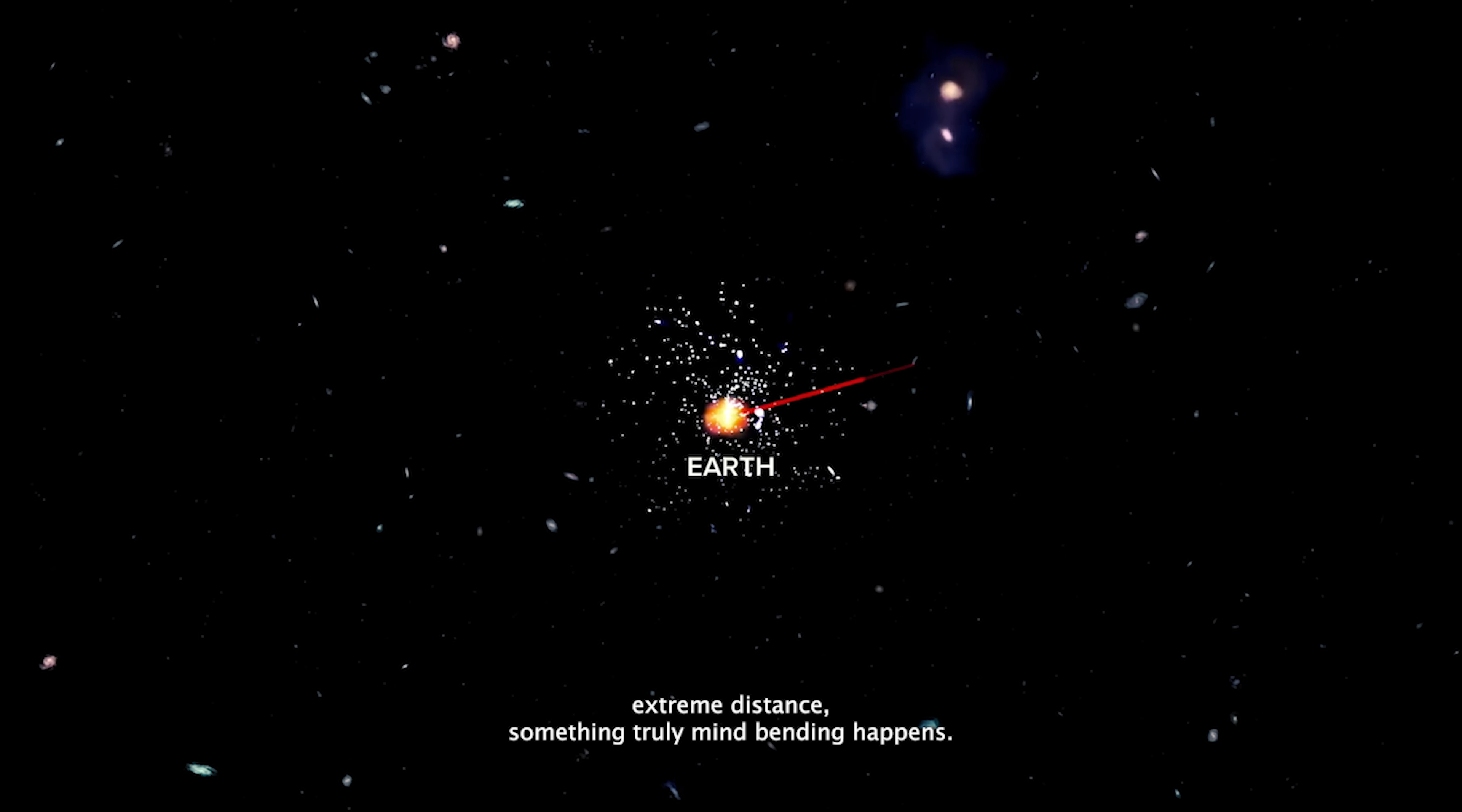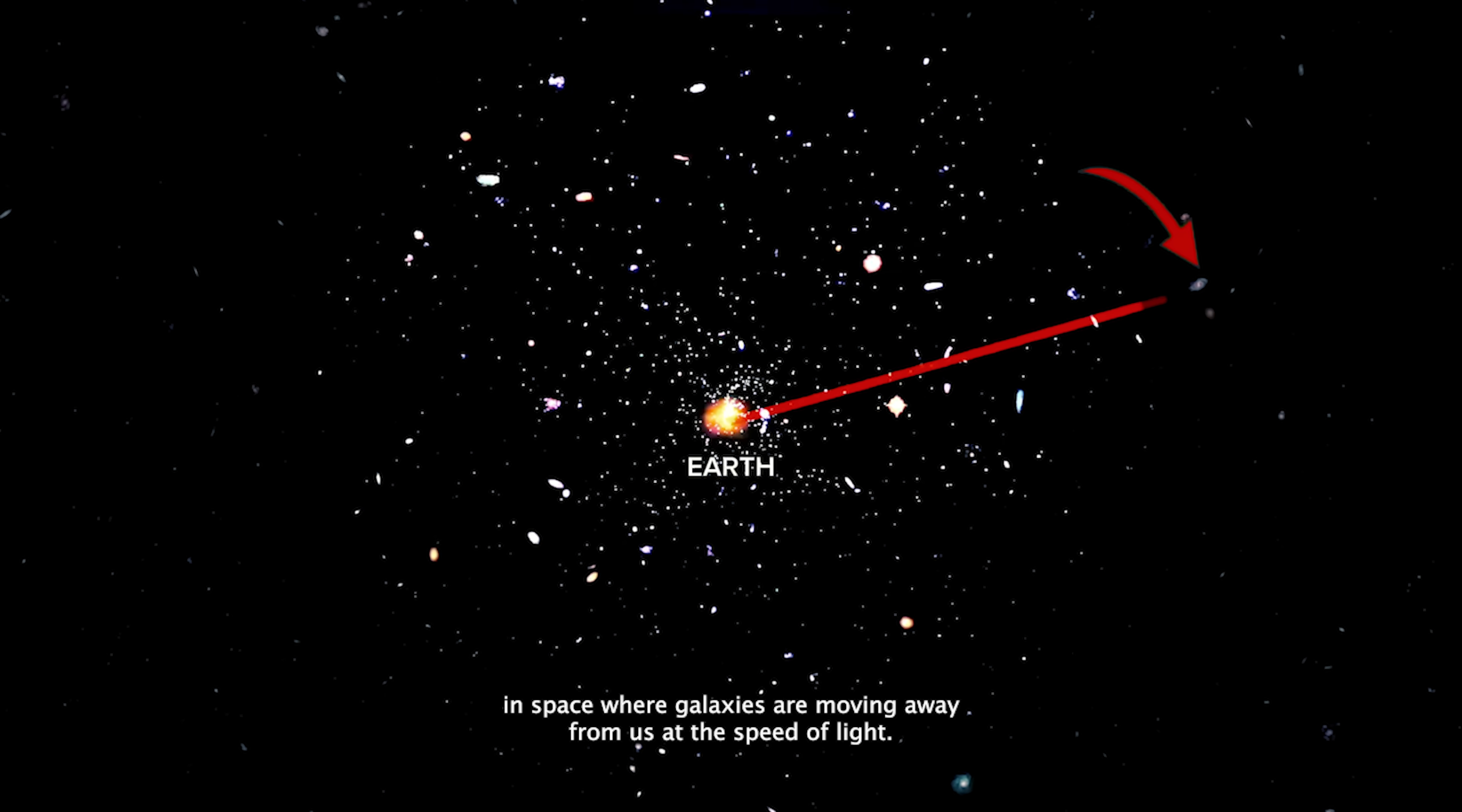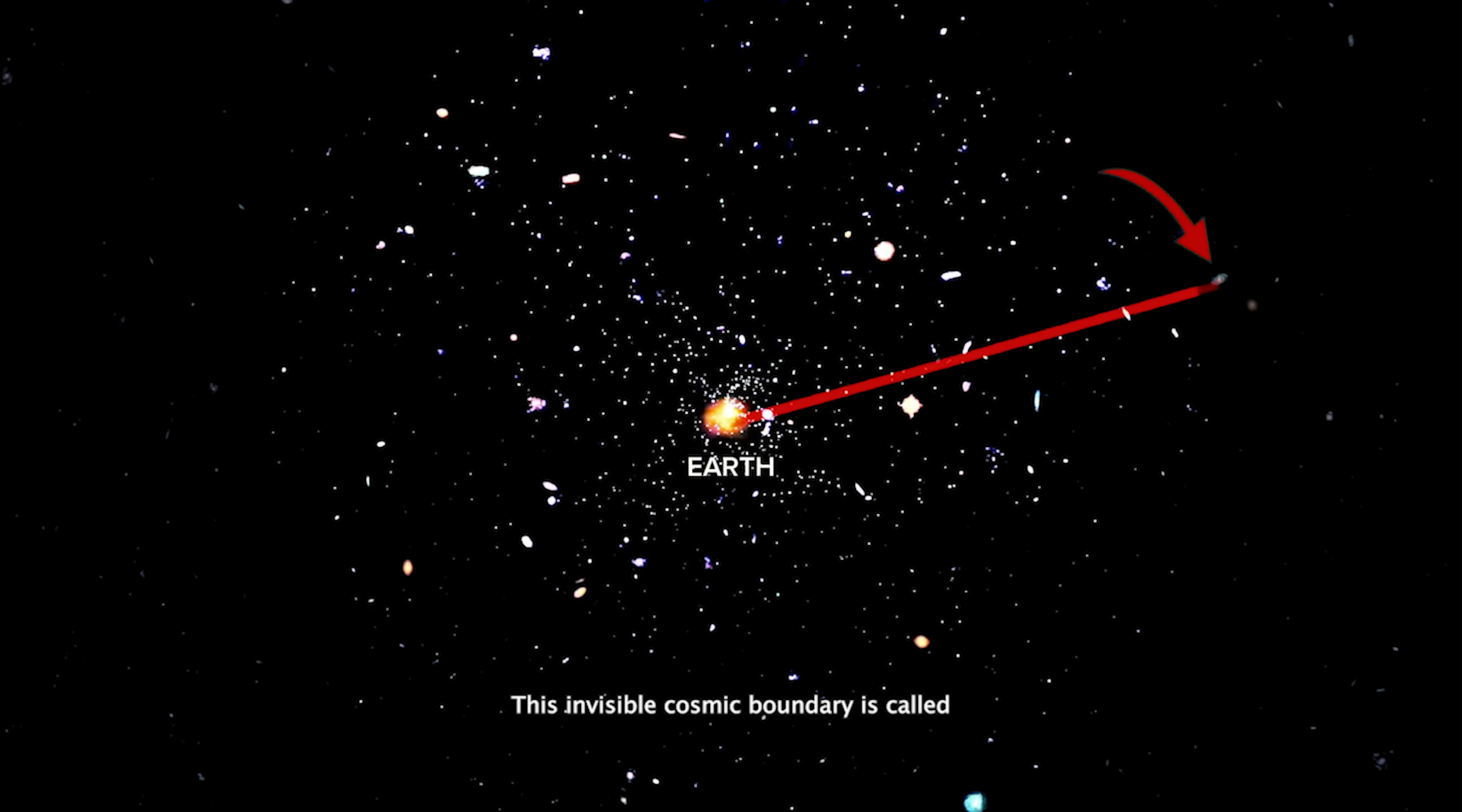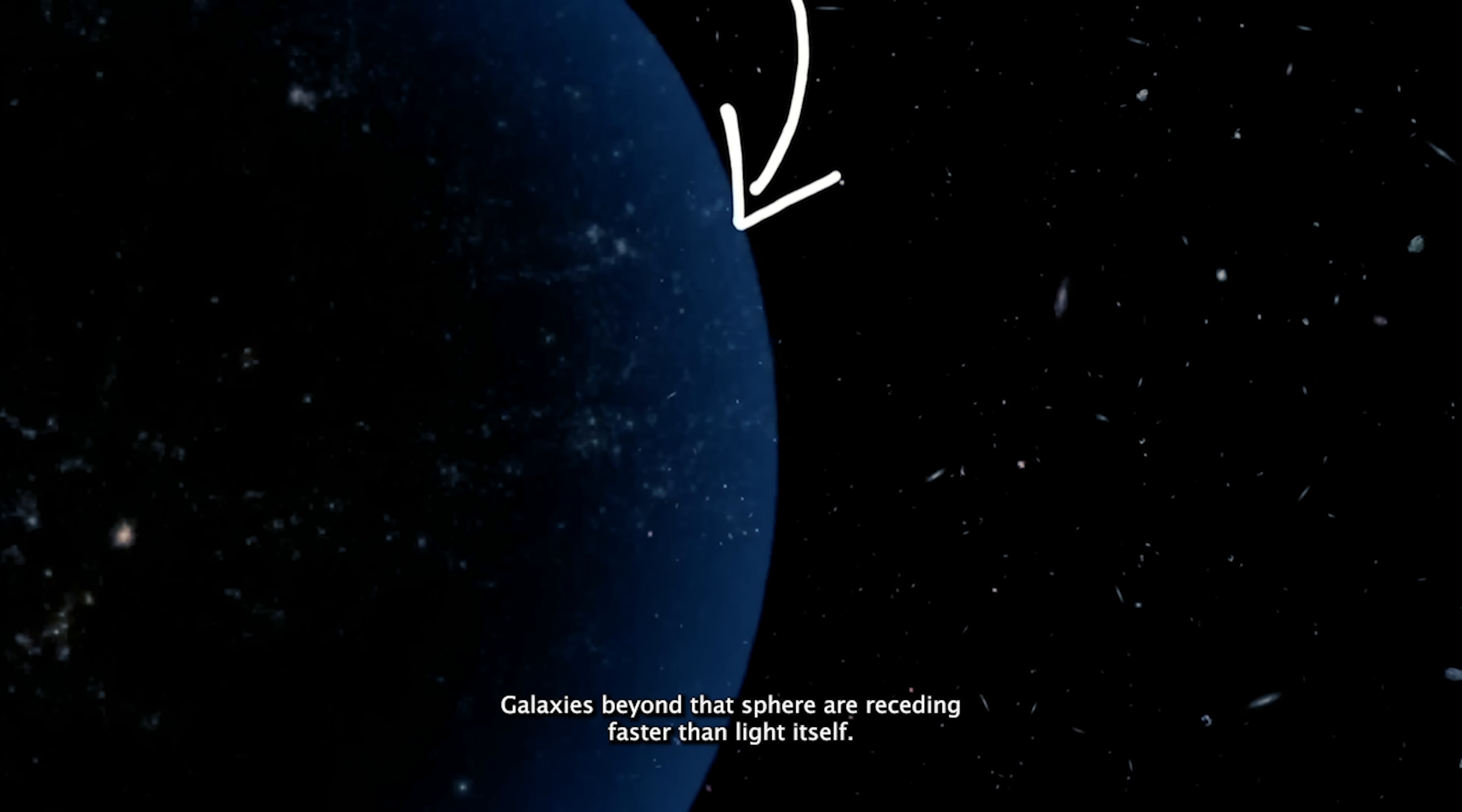And at a certain extreme distance, something truly mind-bending happens. There's a region in space where galaxies are moving away from us at the speed of light. This invisible cosmic boundary is called the Hubble sphere. But here's the twist. Galaxies beyond that sphere are receding faster than light itself.